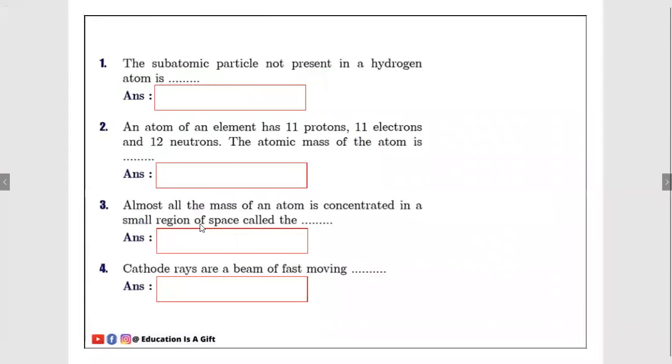Number one: The subatomic particle not present in a hydrogen atom. We know in every atom there will be three subatomic particles: electrons, protons, and neutrons. But in hydrogen, there will be one electron, one proton, and zero neutron. No neutron is available. So the subatomic particle which is not present in hydrogen atom is neutron.